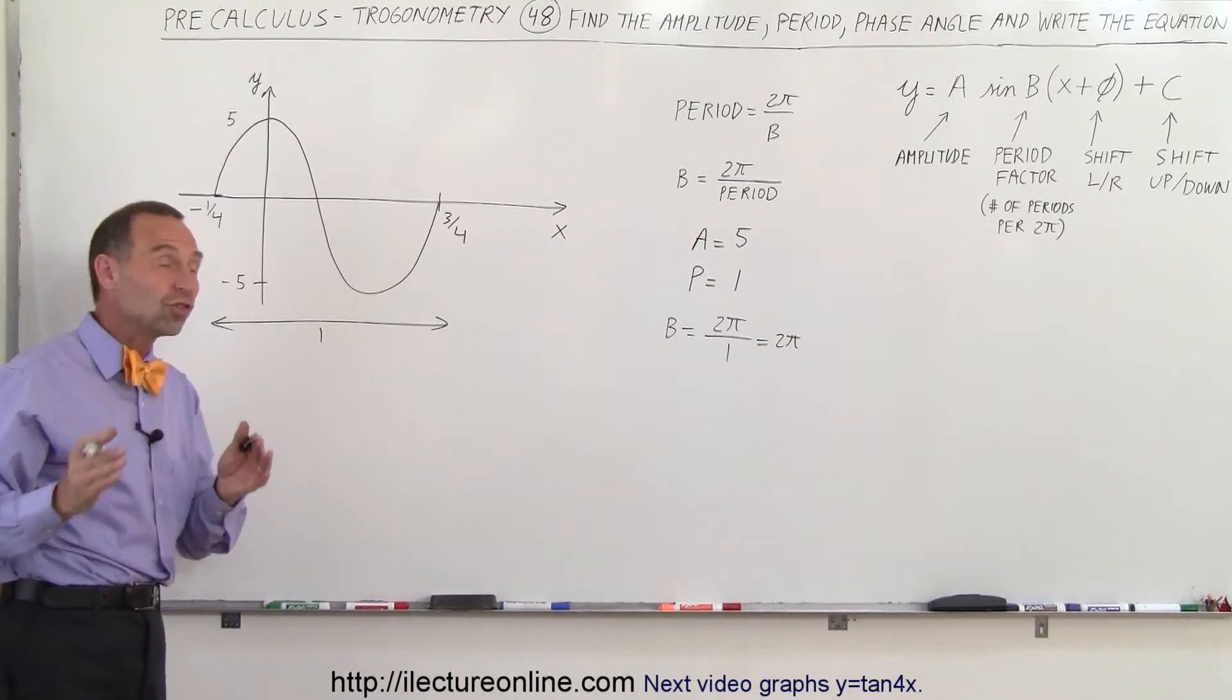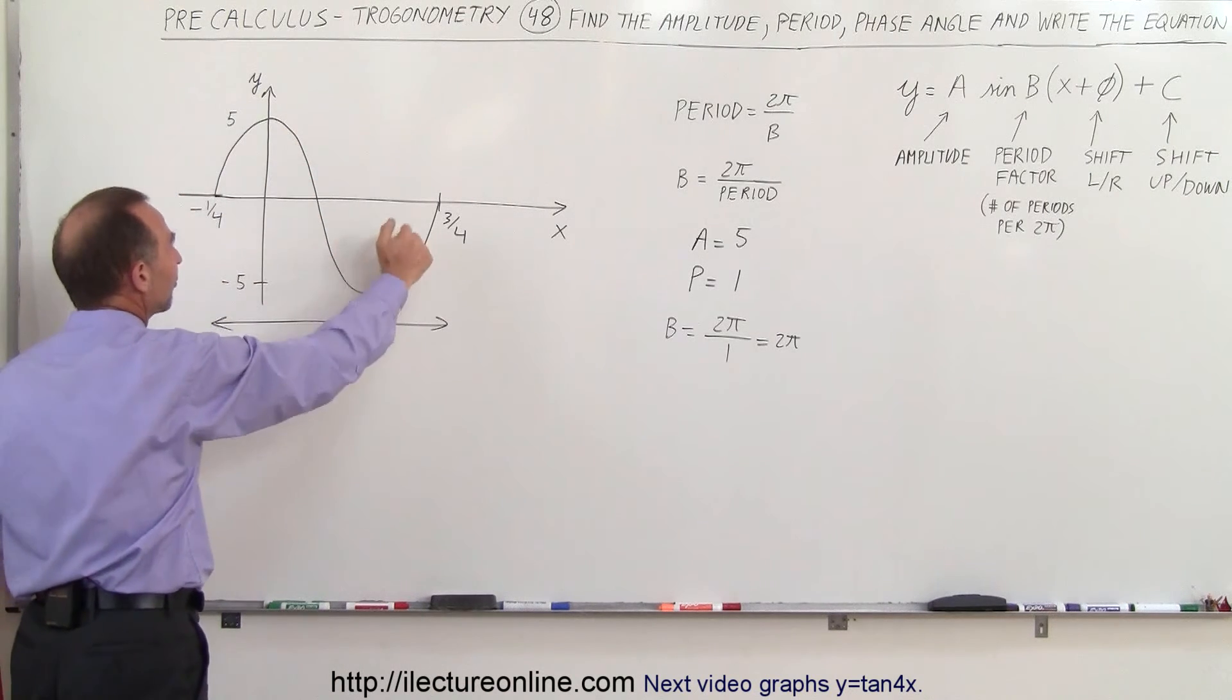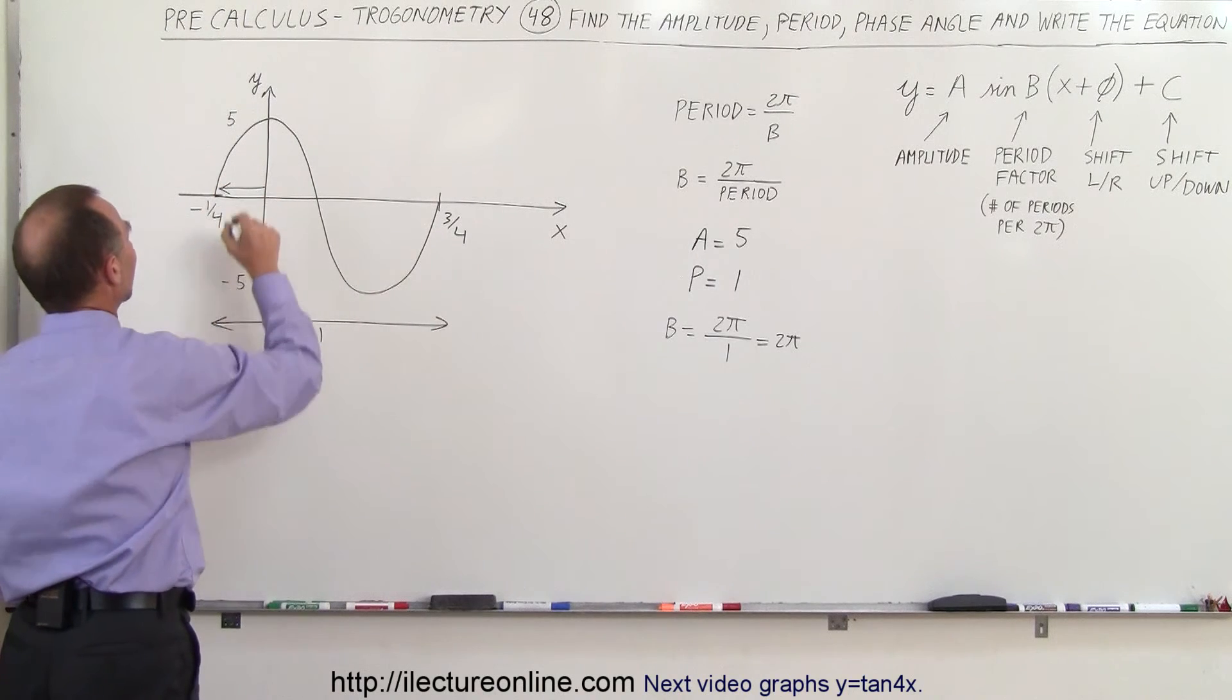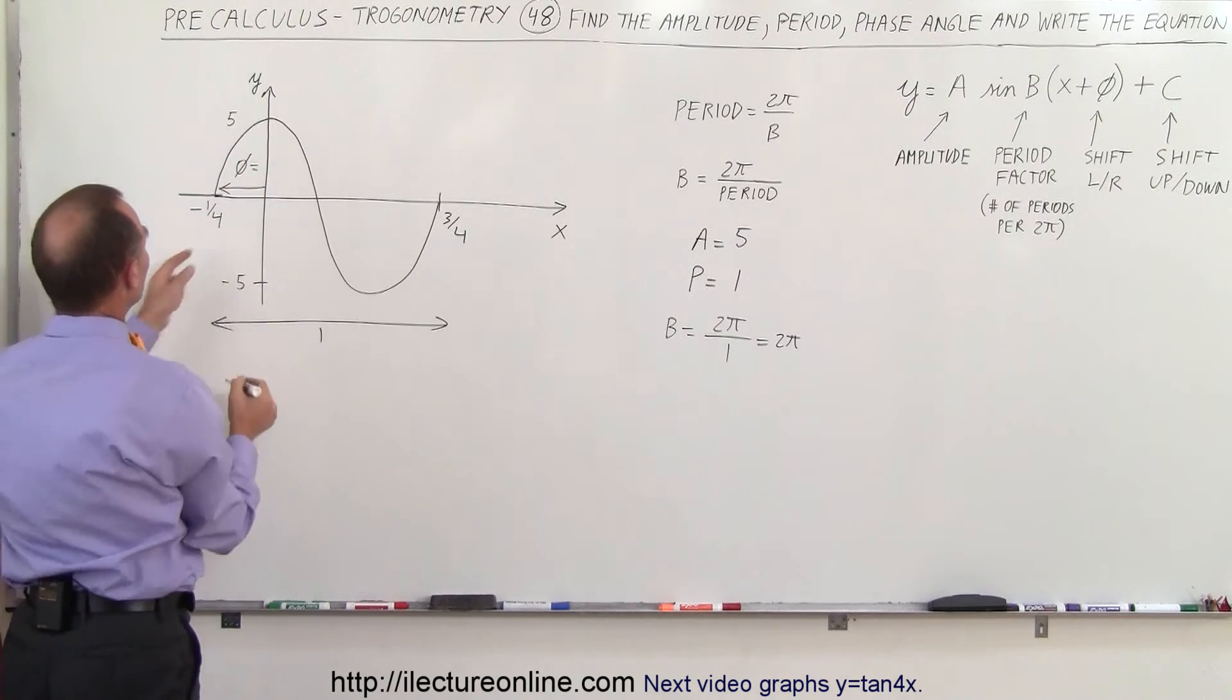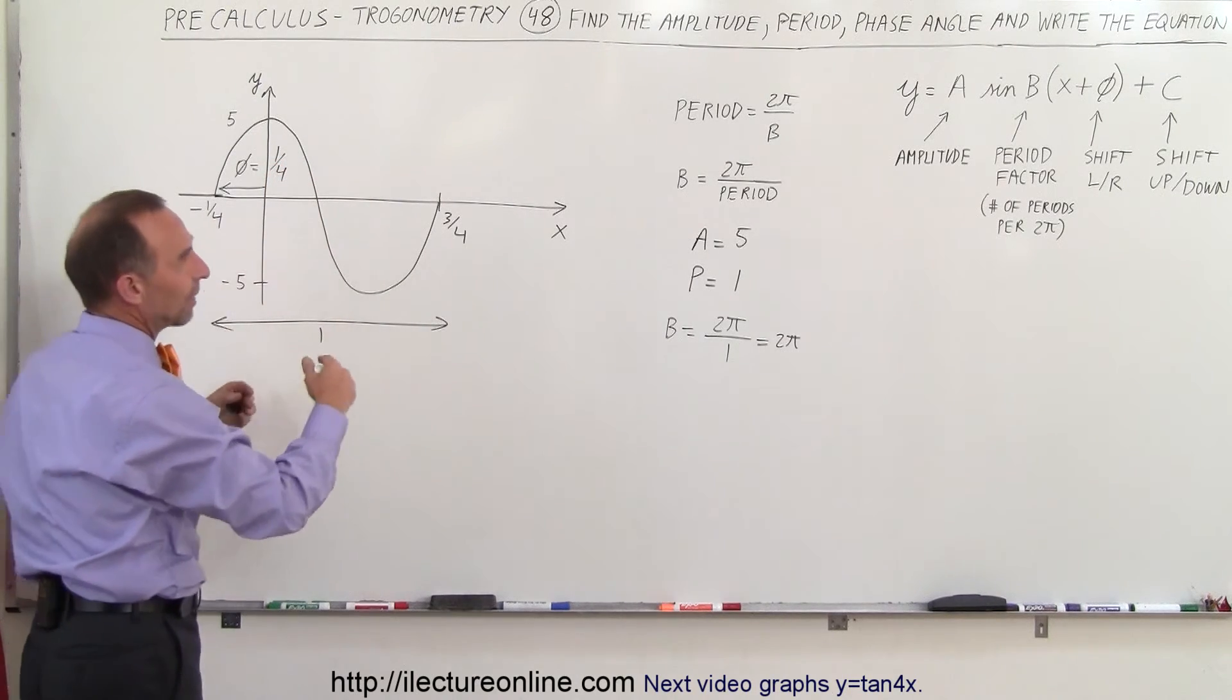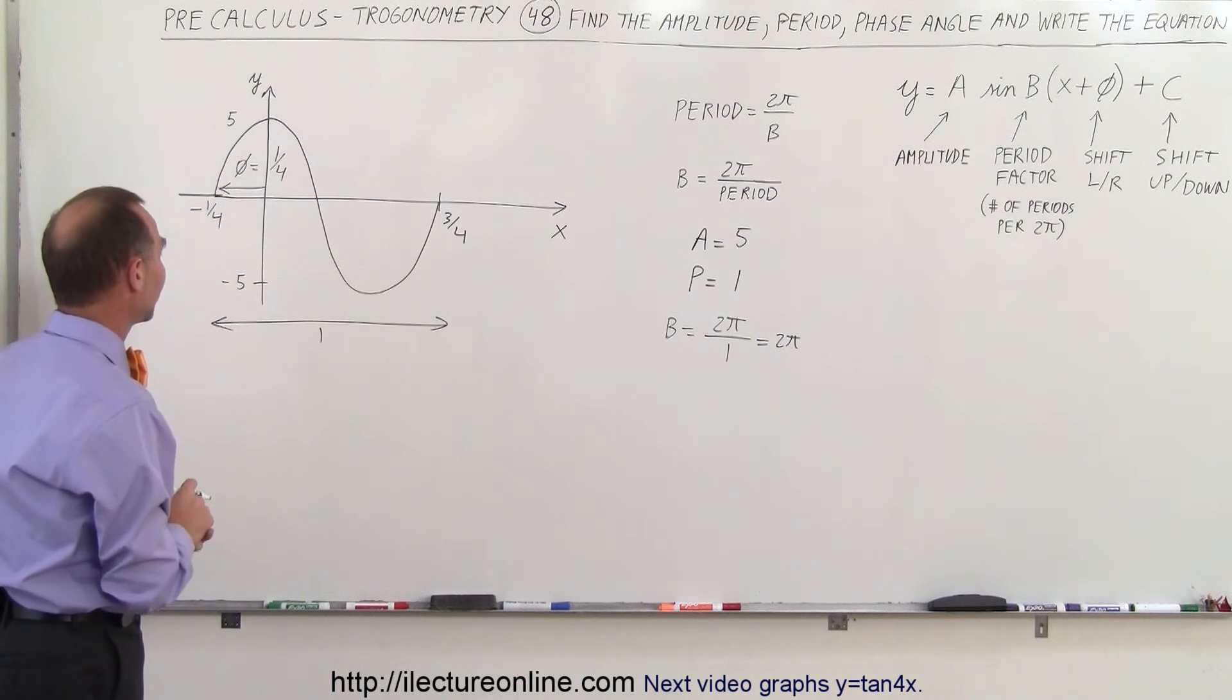We also see that the function is shifted. Since it starts from y equals zero, it looks like a sine function has been shifted to the left. The phase shift is equal to a quarter and it's been shifted to the left, so we're going to add that phase shift, plus a quarter, which will make the whole thing move to the left a quarter.